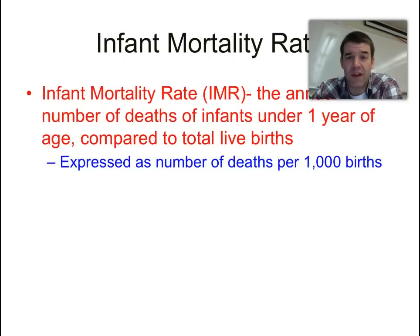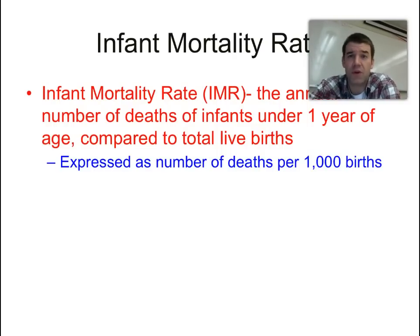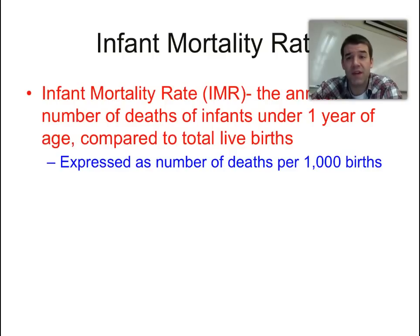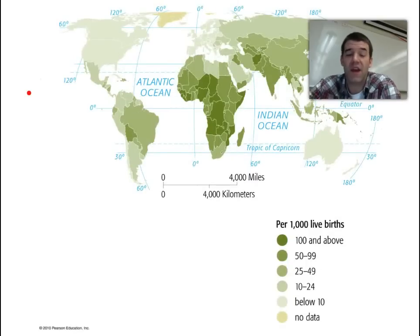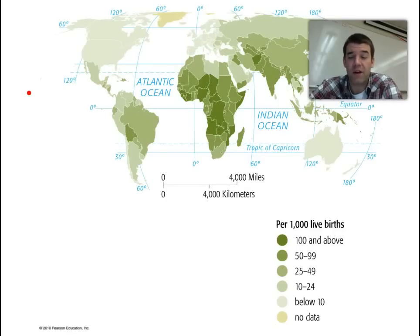Infant mortality rate is another indicator geographers use to assess the well-being of a population and the services and conditions in which children are being brought into the world. It is the number of infant deaths per thousand births in the first year of life. Infants are incredibly fragile and often need intensive care. In places of conflict or in the most undeveloped parts of the world, infant mortality rates can be 100 and above — meaning over 100 children die within the first year of life — and in some conflict zones, as high as 200.